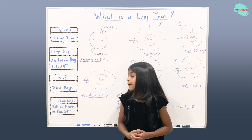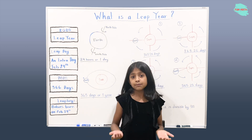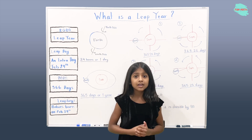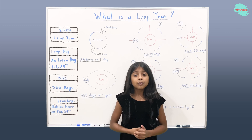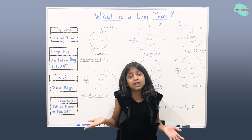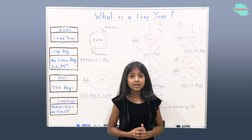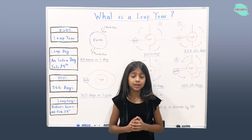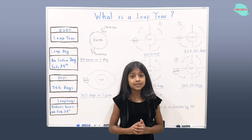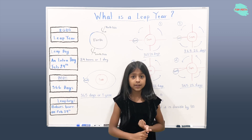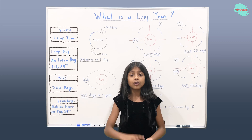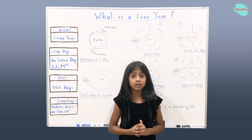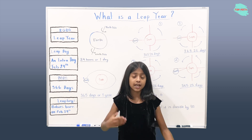People that are born on leap days — on February 29th — are called leaplings. When will they get to celebrate their birthday? It's not fair because they have to wait for the next leap year. But they can celebrate their birthday on February 28th or March 1st, or they can wait until the next leap year.